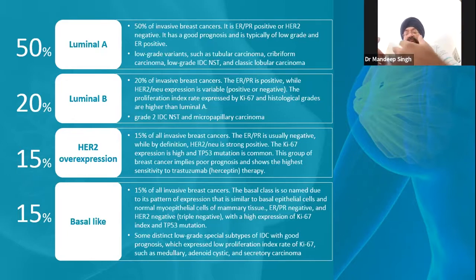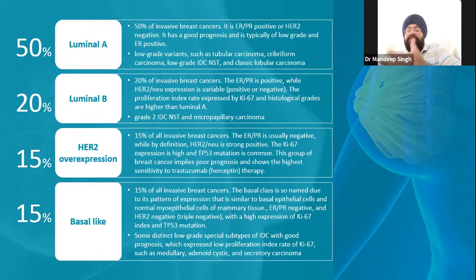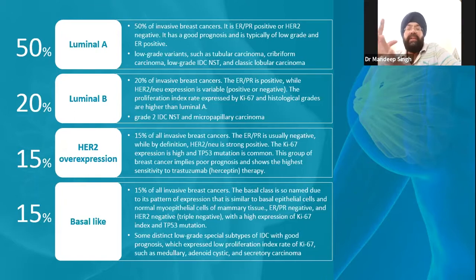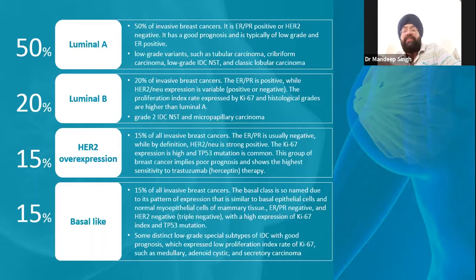In Luminal B, the cancer is not as ER/PR positive, meaning it is not hugely hormone-driven — there must be other pathways leading to cancer formation. HER2 can be positive or negative, and KI-67 starts rising. This is slightly aggressive; surgery remains treatment for all curable breast cancers, but we understand that hormonal therapy alone will not be sufficient. We need more systemic intervention — targeted or other metabolic therapies specific to Luminal B. Grade 2 ductal cancer, microtubular cancer, and certain cribriform and comedo varieties fall into Luminal B.